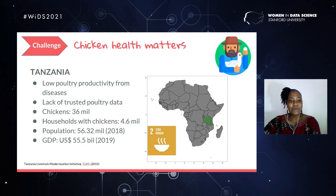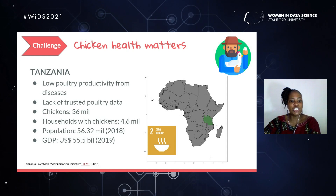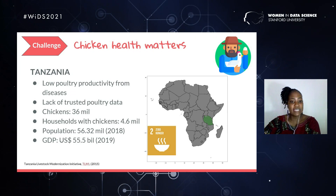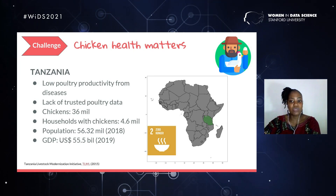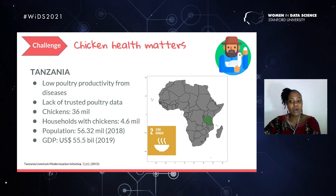Addressing the challenges of poultry farmers — which is mainly diseases — will contribute positively to the second SDG on zero hunger. The population in Tanzania is about 56 million, and we have over 4.6 million households depending on chickens for a living, for food as well as economic income of the household.